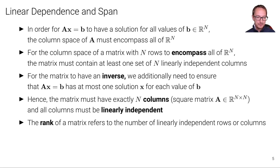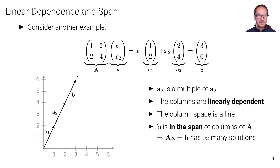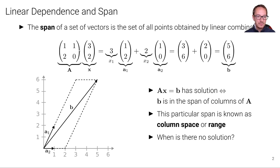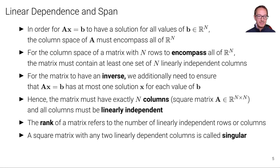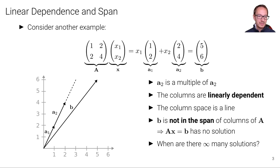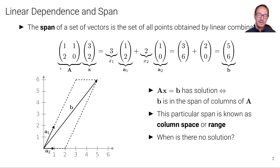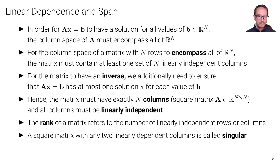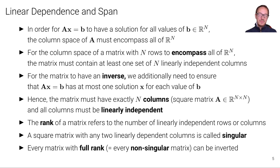The rank of a matrix refers to the number of linearly independent rows or columns. For example, the matrix [1,2; 2,4] has rank one, while the matrix from the first example has rank two because it has two independent columns. A square matrix with any two linearly dependent columns is called singular. In our examples, the matrix [1,2; 2,4] is singular, while the first matrix A is non-singular. Every matrix with full rank — equivalently, every non-singular matrix — can be inverted.